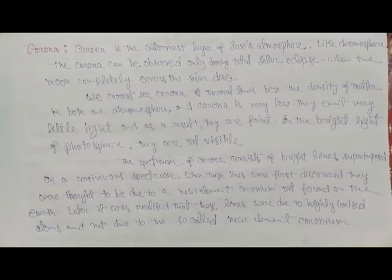Corona is the outermost layer of the Sun's atmosphere. Like the chromosphere, the corona can be observed only during total solar eclipse when the moon completely covers the solar disk. We cannot see corona at normal times because the density of matter in both the chromosphere and corona is very low. They emit very little light, and as a result they are faint. In the bright light of the photosphere they are usually not visible.